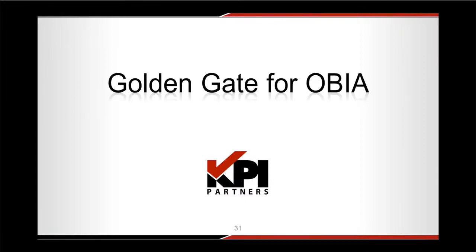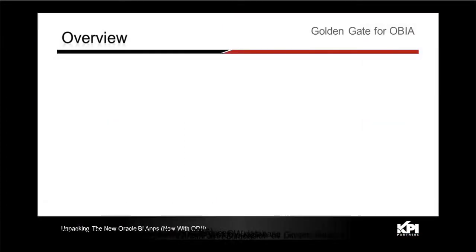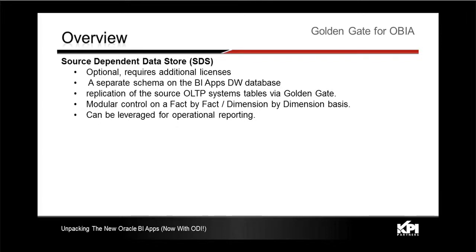Coming to the Golden Gate option, or the near real-time load option — in a typical ETL architecture, you extract data from source into staging and then load it into a target schema. But in this release, Oracle has also released an optional deployment where you can use a Source-Dependent Data Store, which is a separate schema deployed on the BI Applications data warehouse that contains data from sources — basically a copy of the table structure found in the source system or OLTP system.